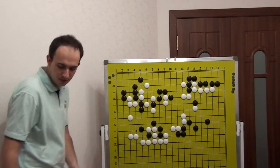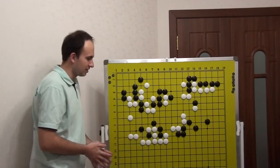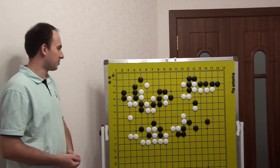If White plays Atari from this side, Black can connect. Black can play here, Black can still go a little bit more inside.